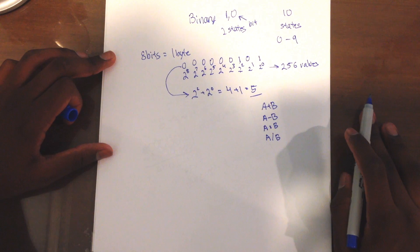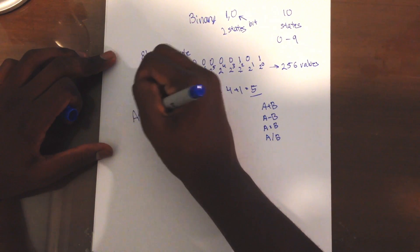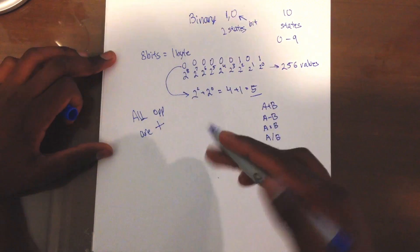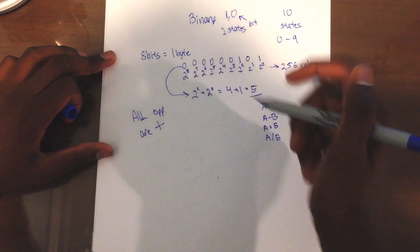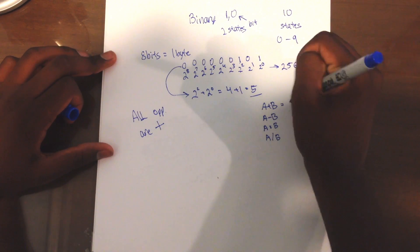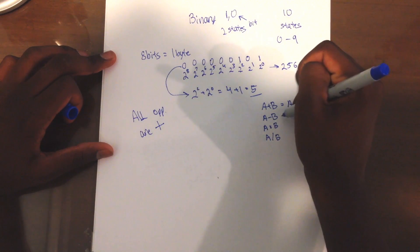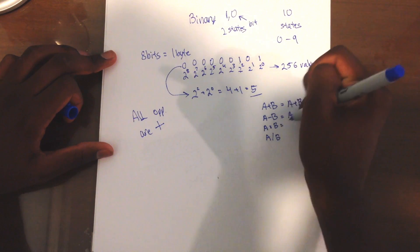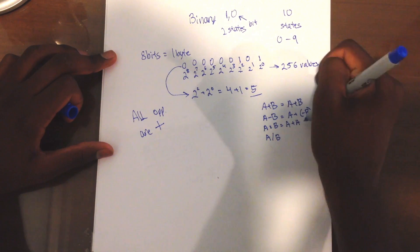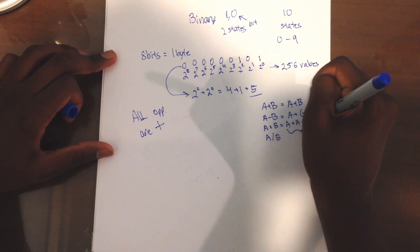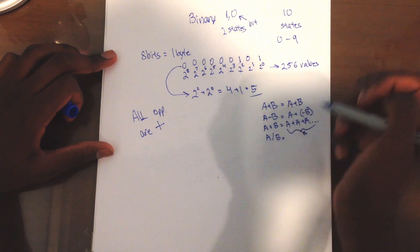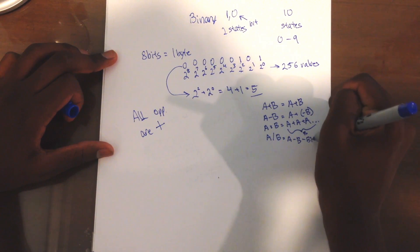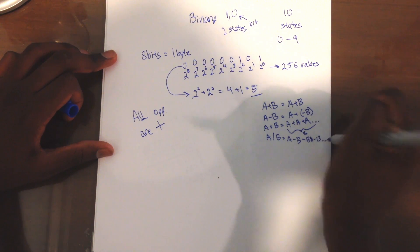For CPUs, we figured out something really important: all operations are addition. A plus B is equal to A plus B. A minus B is equal to A plus negative B. A times B is equal to A plus A plus A, B times. And A divided by B is equal to A minus B minus B minus B as many times as you can.